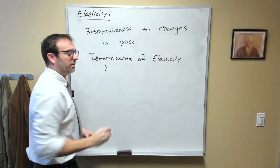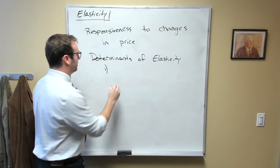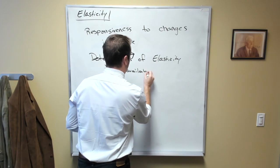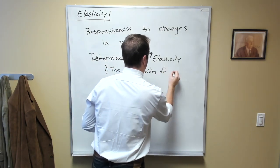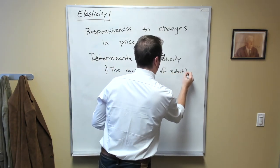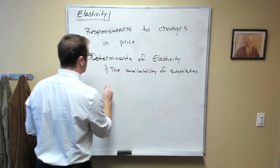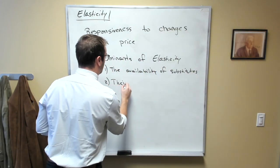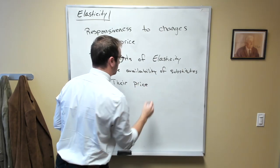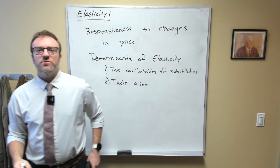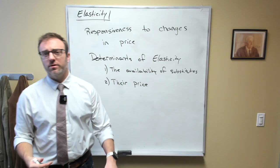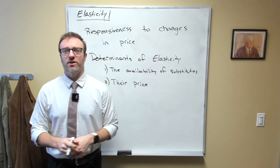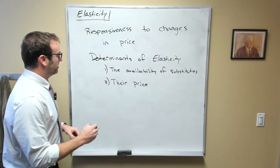Basically, there are two things. One is the availability of substitutes, and two would be the price of those substitutes. Remember, substitutes are any two or more goods that can basically be used at least somewhat interchangeably.